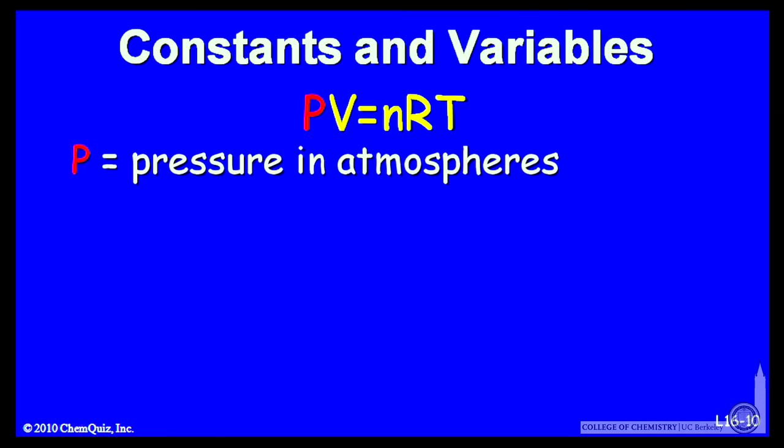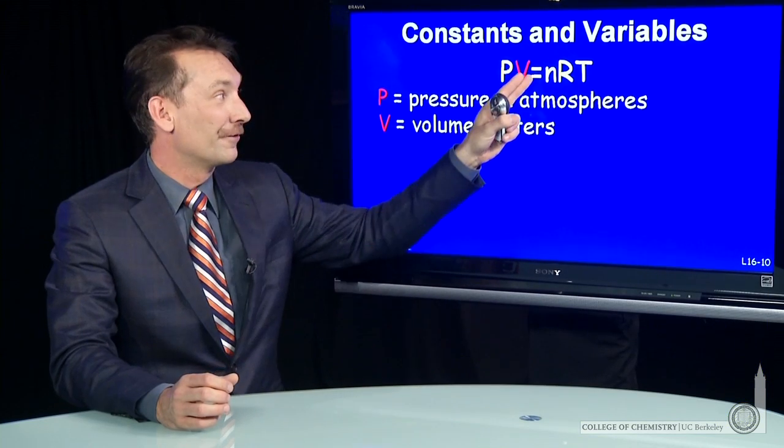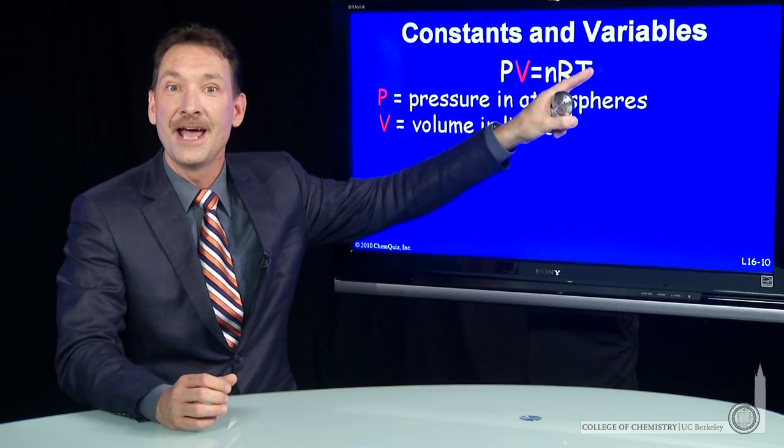When we do that, P will take the pressure in atmospheres. We'll take V, the volume in liters. And we know the product of the pressure and the volume is a constant for a fixed number of moles and a fixed temperature.